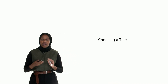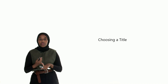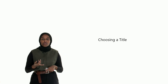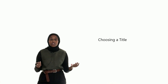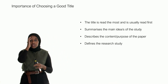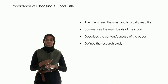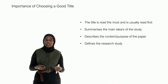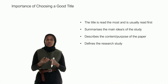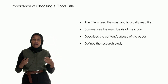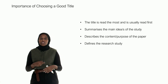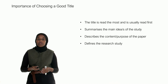The absolute final thing you have to do once you've completed writing your thesis is to choose a title. This is the last thing you should be doing after you've written your results, concluded, and got your discussion. You want to choose a good title because it's usually the first thing read. It should contain keywords, communicate the research idea, describe the content and purpose of the paper, and define the research study. By looking at your title, a reader should be able to understand what is coming up and what the main results are.